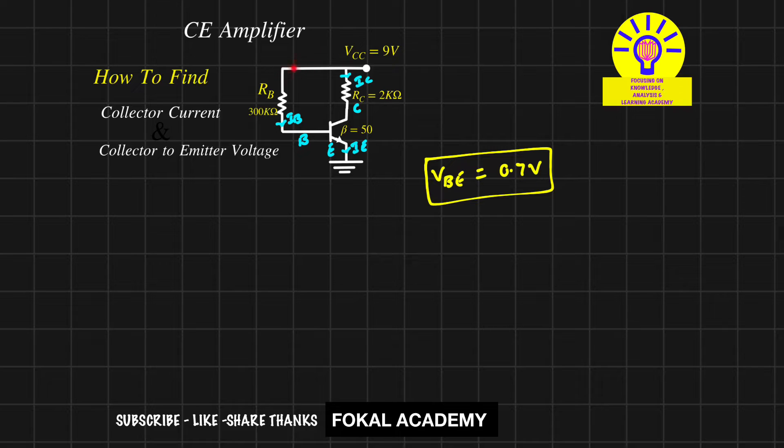Now apply KVL in this loop. We get VCC = IB × RB + VBE. From this, we get base current IB = (VCC - VBE) / RB.